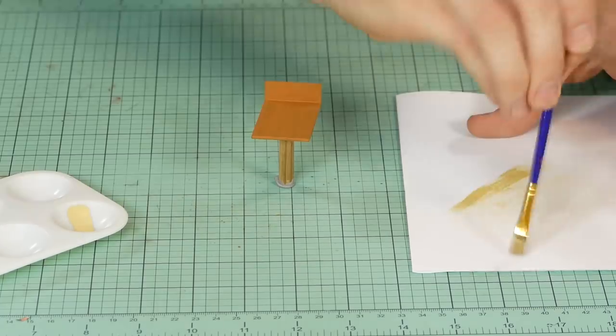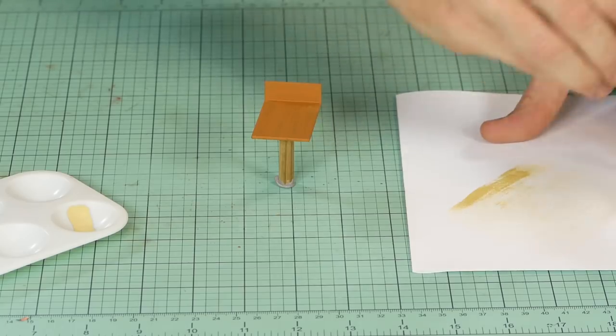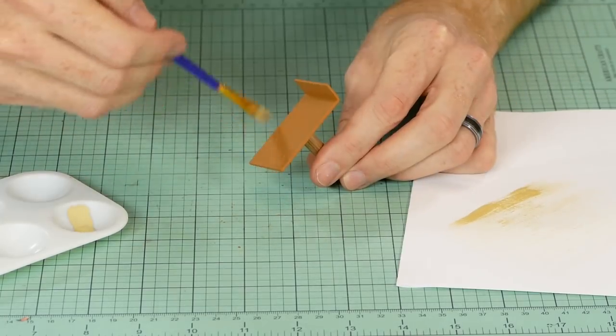Then dry brush the entire flatbed with beige, starting off very lightly and adding more to get the desired look.